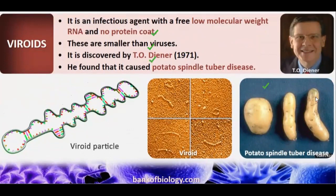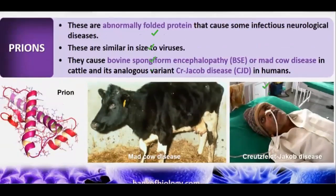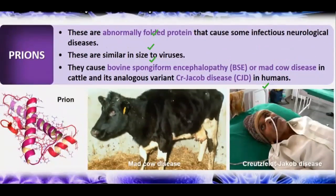Prions are infectious protein particles, similar in size to viruses but consisting of abnormally folded proteins with no genetic material. They cause neurological diseases such as Mad Cow Disease and Creutzfeldt-Jakob disease — neurological disorders in which affected individuals behave abnormally.